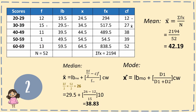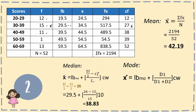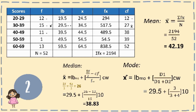Lastly, for the mode, it is expressed through the mode formula. The mode is 15 because it is the highest value in the frequency. For D1, subtract the value before the mode from 15: 15 minus 12 equals 3. For D2, subtract the value after the mode from 15: 15 minus 11 equals 4. The lower boundary is 29.5 and class width is 10. So: 29.5 plus (3 divided by 3 plus 4) times 10 equals 33.79.